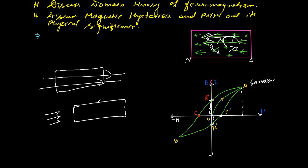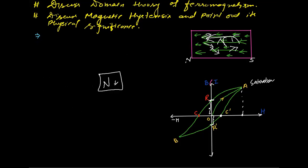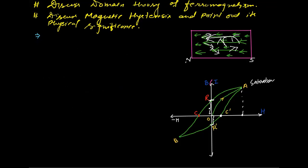A material with high coercivity will maintain its magnetization for a long time and is hard to destroy with a reverse field — making it suitable for permanent magnets. In the laboratory, materials like alnico — aluminum, nickel, cobalt, and iron combined — are used for permanent magnets. For transformer cores and soft iron applications, materials with low coercivity and low retentivity are preferred. This is the key idea from the hysteresis loop analysis.